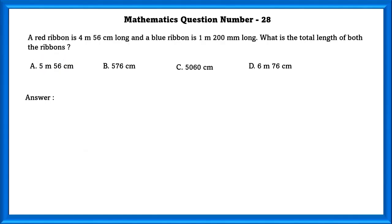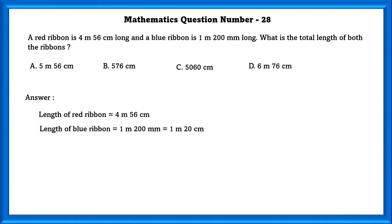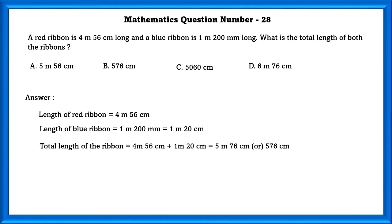Mathematics question number 28. A red ribbon is 4 meters 56 cm long and a blue ribbon is 1 meter 200 mm long. What is the total length of both ribbons? Since one is in centimeters and one is in millimeters, we first convert them into the same unit in order to add. After converting, adding gives us 5 meters 76 cm, or 576 cm.